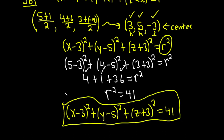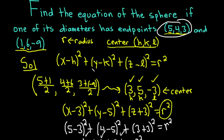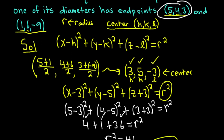A quick recap of what we did: we were given the endpoints of one of the diameters of the sphere, so we found the center by finding the midpoint — averaging the x, y, and z coordinates. Once we had the center, we plugged it into the equation of the sphere, then used the point (5, 4, 3) to solve for r².